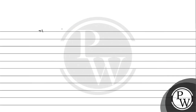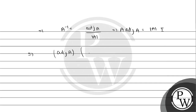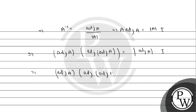Here we have A inverse. We have adjoint of A, which is the value of A into adjoint of A. So here we have the identity matrix. Adjoint of A — we have the identity matrix. So here we have adjoint of A, so adjoint of A.